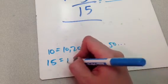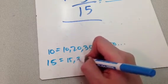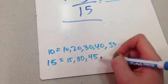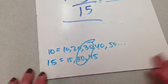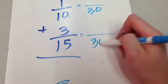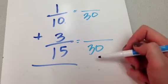Fifteens, though, they're a little worse. Fifteen times one is fifteen. Fifteen times two is thirty. Fifteen times three is forty-five. Wait a minute, thirty. That'll work, right? Thirty. Thirty. There we go, common denominator.